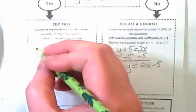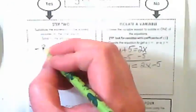Now I can take this 2x minus 5 and I can plug it into the first equation for the y.